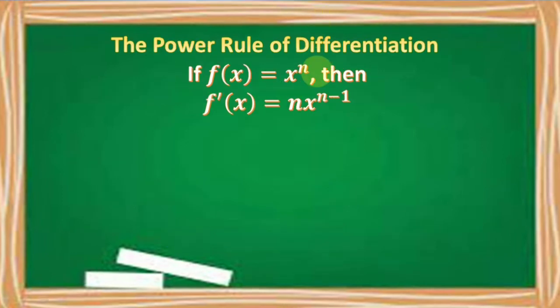With the power rule of differentiation, if f of x is equal to x raised to n, where x is our base and n is our exponent, then f prime of x or its derivative is equal to n times x raised to n minus 1. The exponent is multiplied by the base raised to the given exponent minus 1, and the negative 1 is constant.